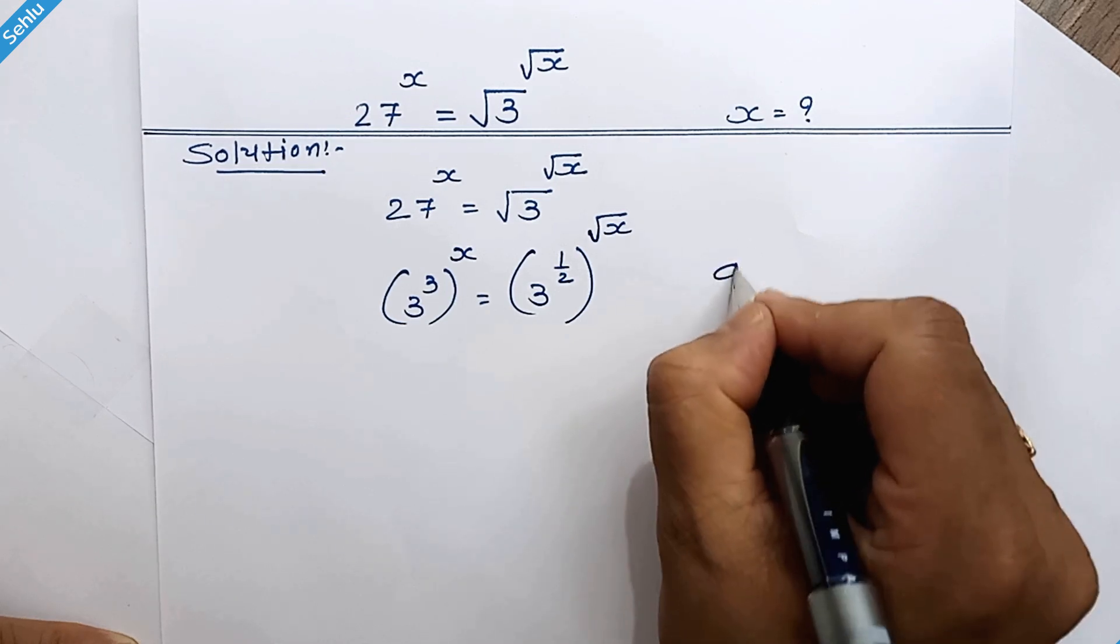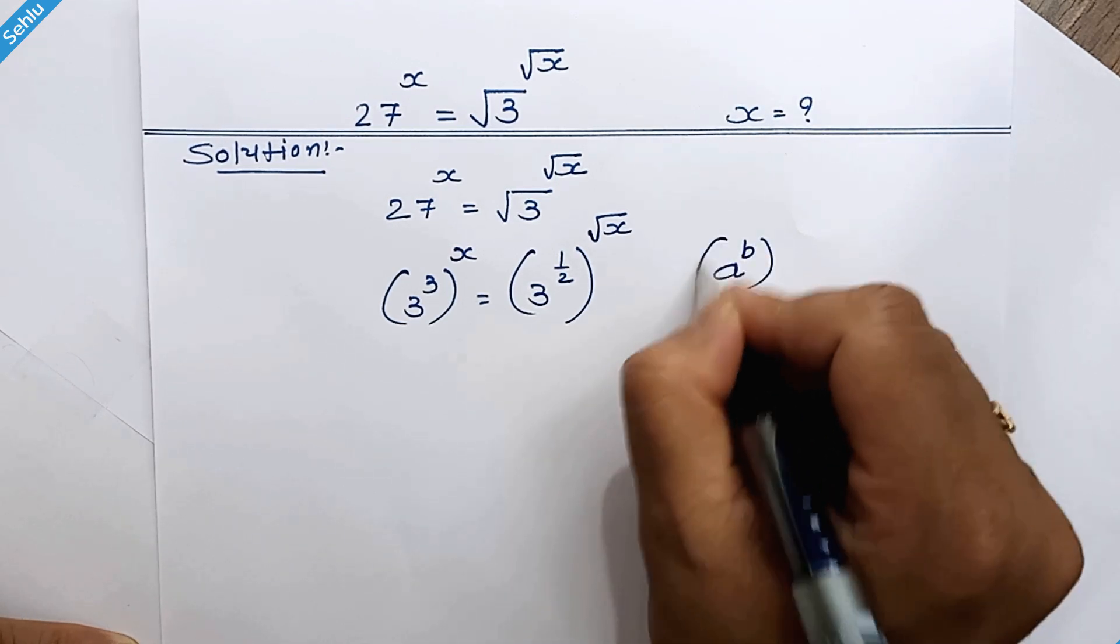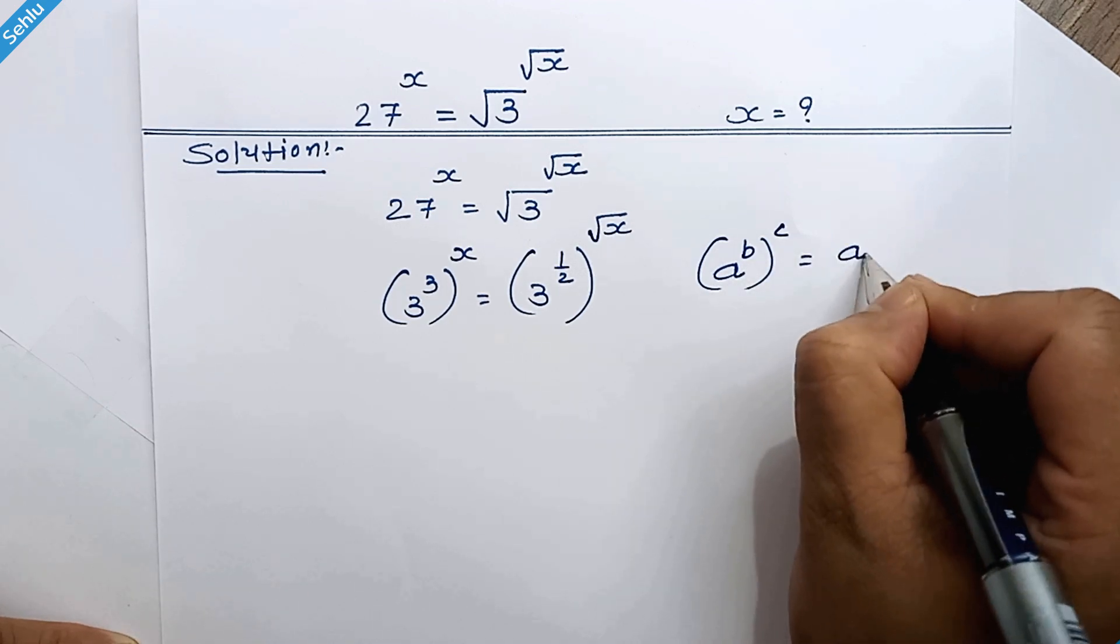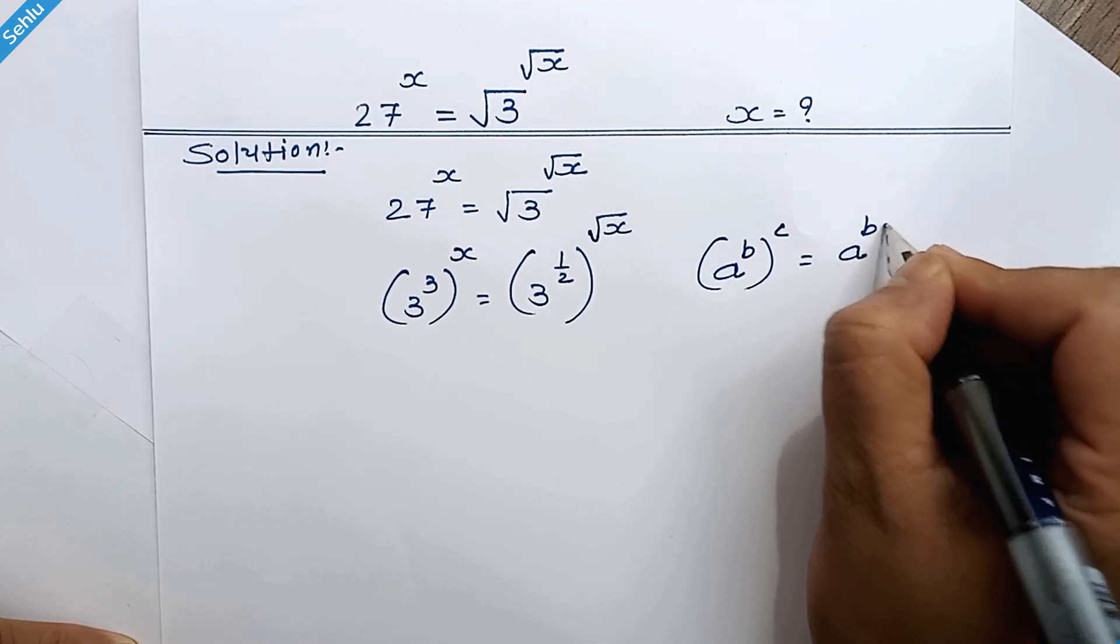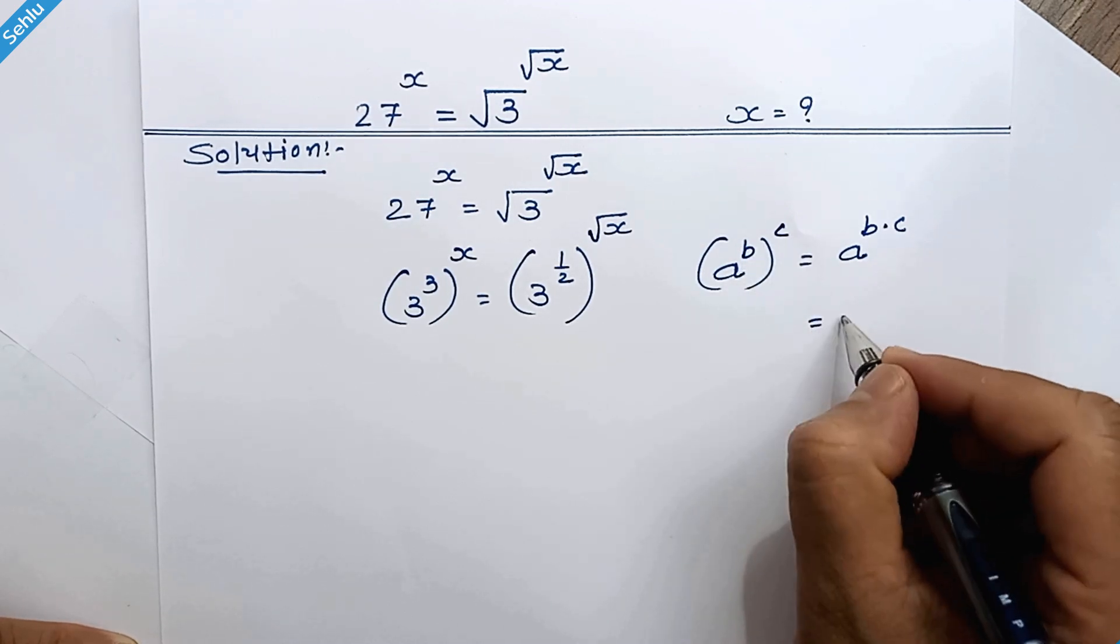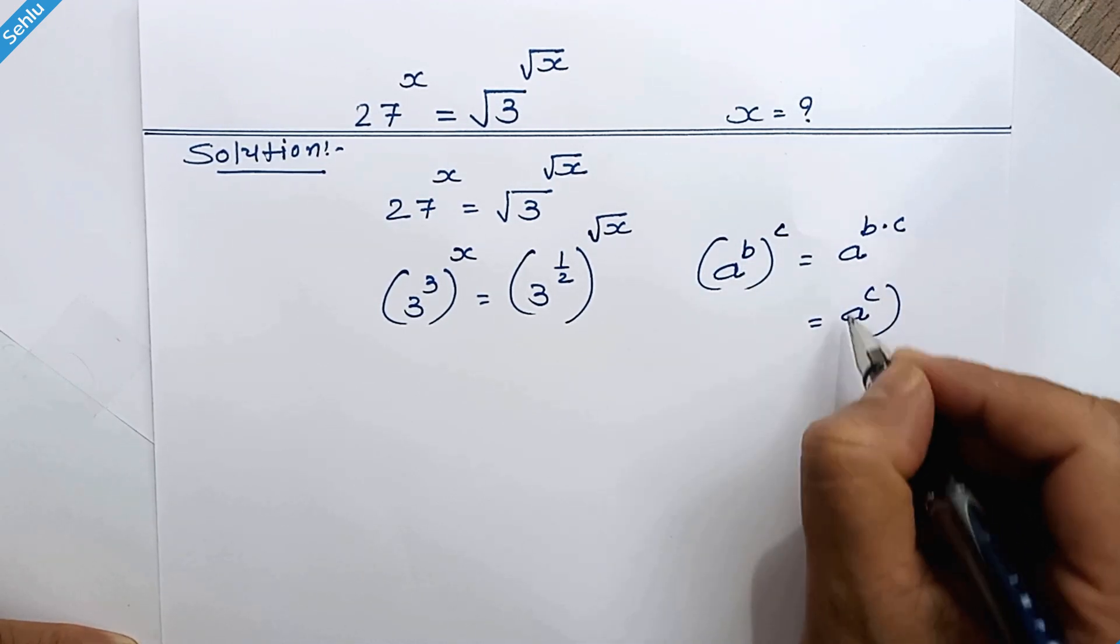Now when we have a to the power b whole to the power c, then it can be this 2 can multiply so it will be a to the power b times c and also this 2 can interchange so it will be a to the power c whole to the power b.